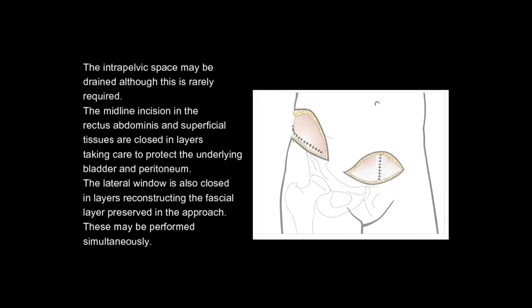The intrapelvic space may be drained, although this is rarely required. The midline incision in the rectus abdominis and superficial tissues are closed in layers, taking care to protect the underlying bladder and peritoneum. The lateral window is also closed in layers, reconstructing the fascial layer preserved in the approach.